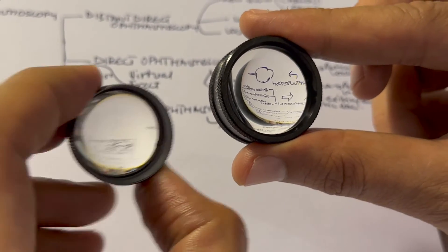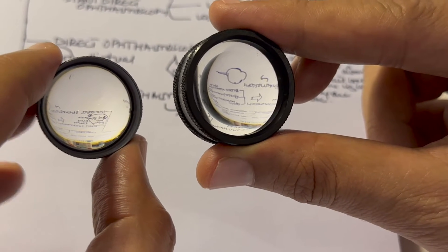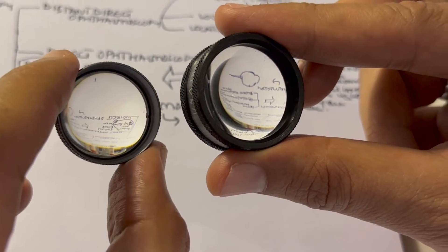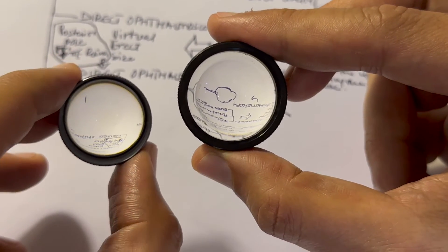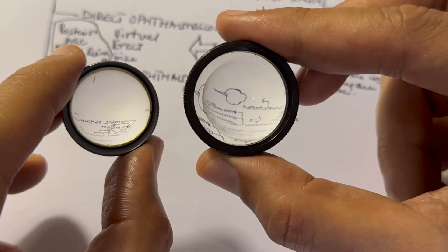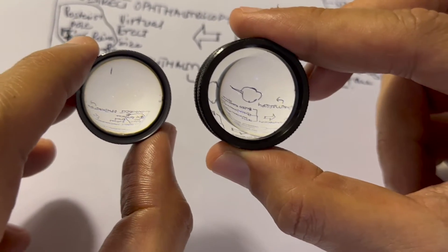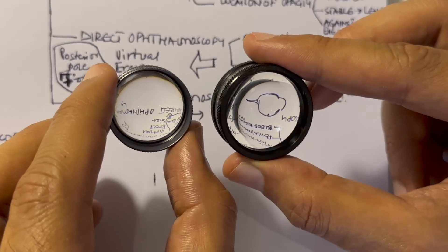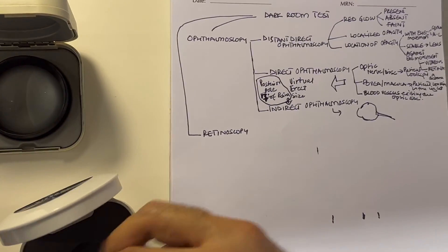You can also use a 78-diopter lens when using the slit lamp. The difference between a super field or 90-diopter lens and a 78-diopter lens is that in the 90-diopter lens the image is minified but the field of vision is more, whereas in the 78-diopter lens the image is bigger but the field is smaller. However, in both lenses the image is inverted and real.